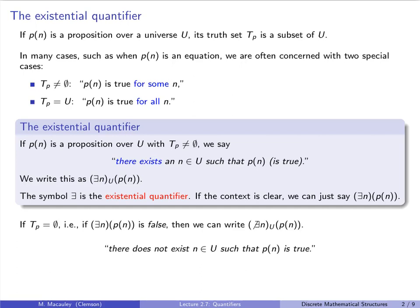Now if the truth set is empty — in other words, if the statement 'there exists N such that P of N' is actually false — then we can denote this by drawing a diagonal slash through the existential quantifier symbol, which means: there does not exist an N over U such that P of N is true.